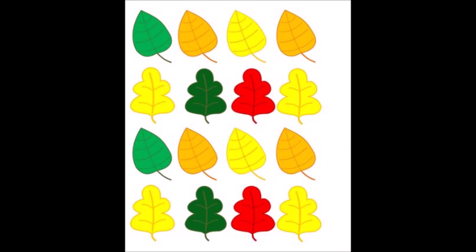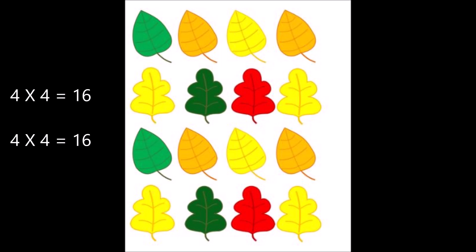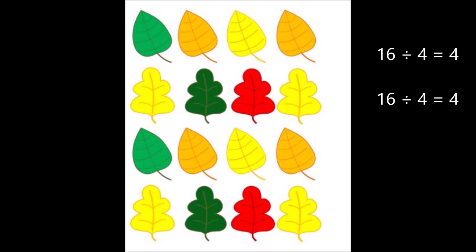Let's look at this array next. What fact family can be written about this array? Since we're talking about fact families, we need to write two multiplication facts and two division facts. I count four rows times four columns, so this picture shows four times four equals 16. The other multiplication fact is also four times four equals 16. For the division facts: 16 divided by four equals four, and again 16 divided by four equals four. Those are all four facts in the fact family.